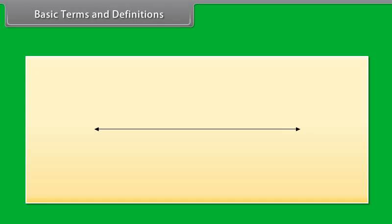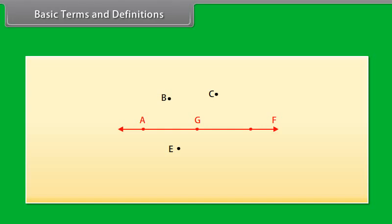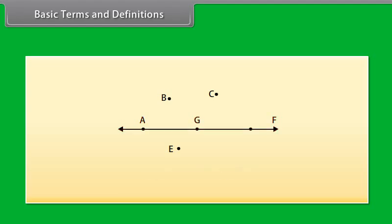We know that a part or portion of a line with two endpoints is called a line segment. The line segment AB is denoted by this symbol. A part of a line with one endpoint is called a ray. The ray AB is denoted by this symbol. And the line is denoted by this symbol. We also know that if three or more points lie on the same line, they are called collinear points. Here, A, G, F are called collinear points, and points B, C and E are called non-collinear points.